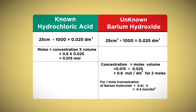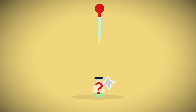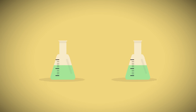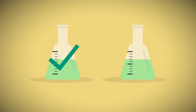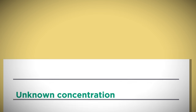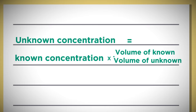So, using these titration calculations, we can work out the exact concentration of an unknown solution. We have to carry out the titration first so that we know the exact volume and concentration of a known solution, and we also need to know the volume of the unknown solution. Armed with this knowledge, we can then work out the exact concentration of that unknown solution.